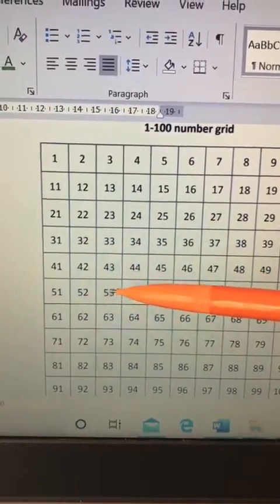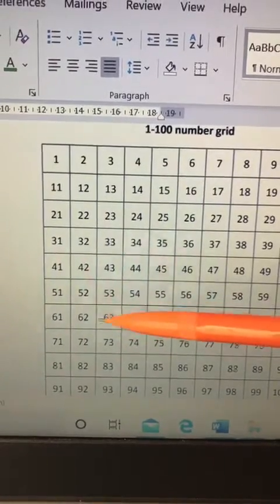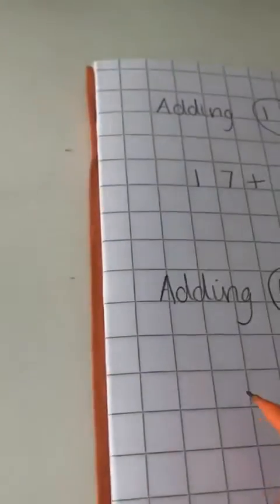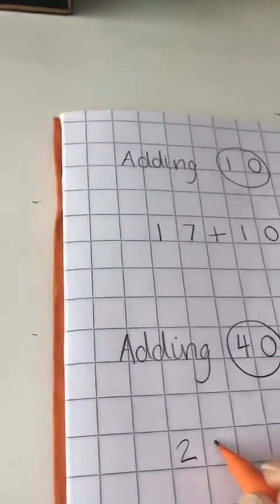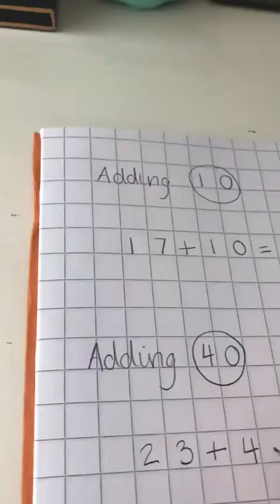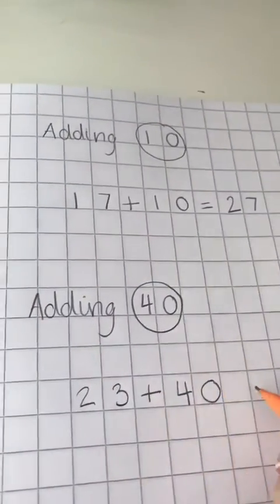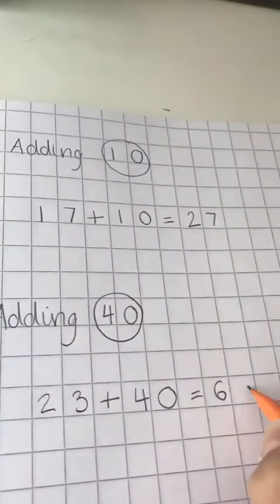10, 20, 30, 40. I've landed on 63. So my sum would be 23 plus 40 equals 63.